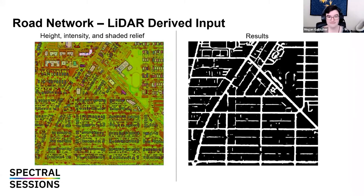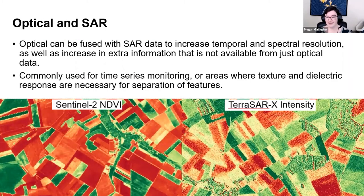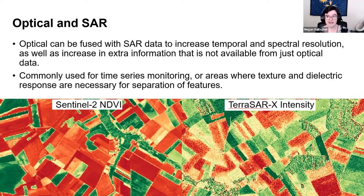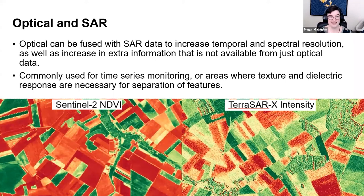Lastly, I'm going to talk about optical and SAR — Synthetic Aperture Radar. SAR gives a reflectance response and is an active sensor: it hits the ground and we get a reflectance response, similar to LiDAR. It can also see through clouds, allowing constant monitoring. Optical data can be fused with SAR to increase temporal and spectral resolution, as well as to gain extra information not available from optical data alone. Commonly this is used for time series monitoring, or in areas where texture and dielectric response are necessary for separation of features.